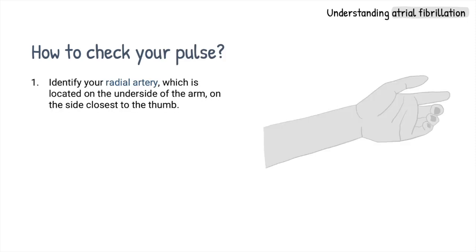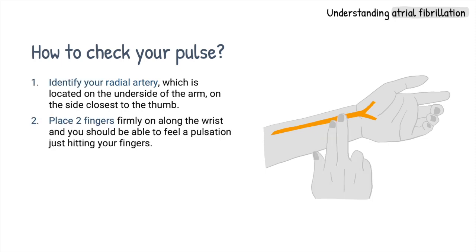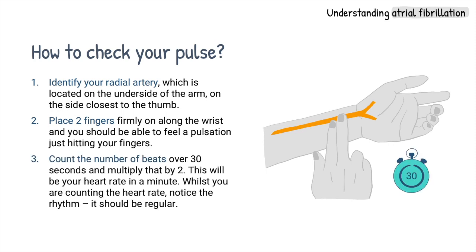So how do we check our pulse? First, you identify your radial artery, which is located on the underside of the arm on the side closest to the thumb. Then you place two fingers firmly along the wrist, and you should be able to feel your pulsation just hitting the tips of your fingers. Lastly, count the number of beats you feel over 30 seconds and multiply that by 2 — this will be your heart rate per minute. Whilst counting, notice the rhythm: it should be regular, so you can predict when the next beat will come. If it is irregular, there is a potential that this could be AF. You can do this at any time during the day when you get the chance.